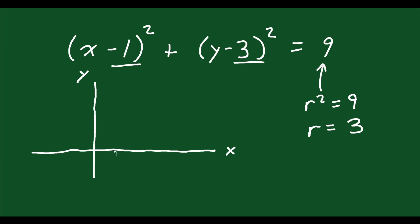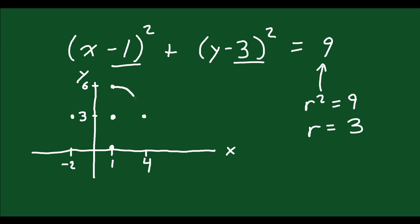Because this is (x minus 1), we're moving to the right 1, so instead of being at 0, the center is at 1. And (y minus 3) means we're moving up to 3. That's the new center of the circle. To draw the rest, use the radius: the highest point is 3 above the center, up at 6. Going right 3 puts you at 4. The lowest point is 3 below the center, down at 0. Going left 3 puts you at negative 2. Now you can connect these dots together as neatly as possible.